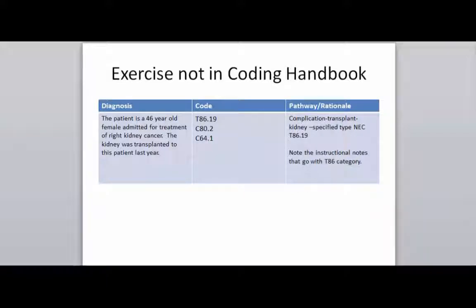To show you the pathway: in the case of a transplant, you're going to start with complication as your main term, then transplant, then kidney specified type NEC. That gives you a T86.19 code.